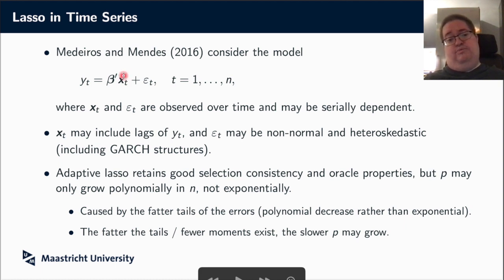There would be serial dependence among the x's. There may even be serial dependence among the epsilons, although of course you would not want to have both lags of y and serial dependence there. But you would definitely also want to have is something like non-normality, fat tails, heteroskedasticity. You think, for instance, about you want to have a GARCH structure and maybe you want to estimate such a model on financial data.